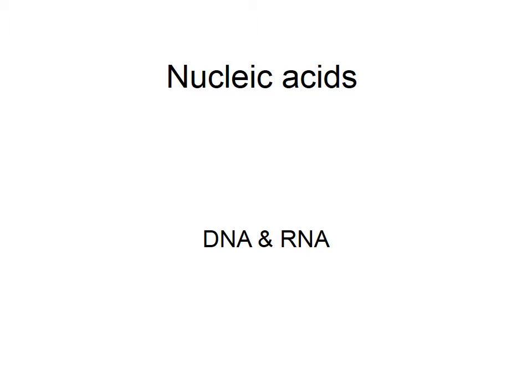Nucleic acids: DNA and RNA. DNA and RNA are polynucleotides — they're big. Polynucleotides are polymers, and polymers of course are made of monomers, so the monomer of a polynucleotide would be a nucleotide, and that's what we're going to look at in this video.